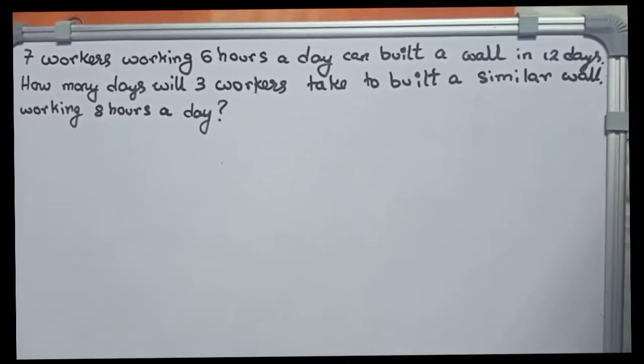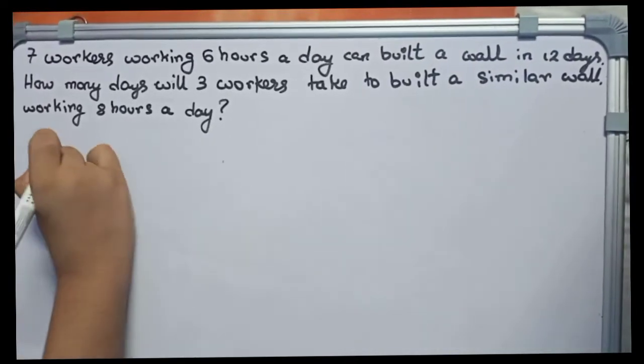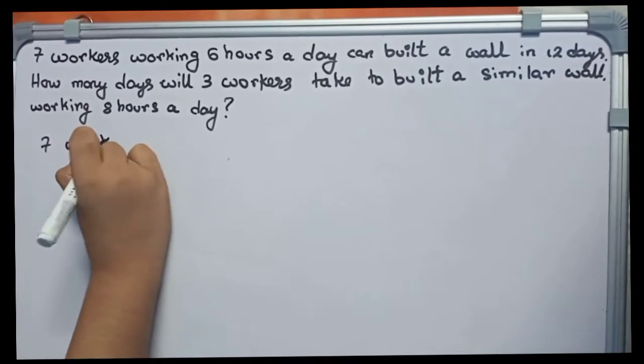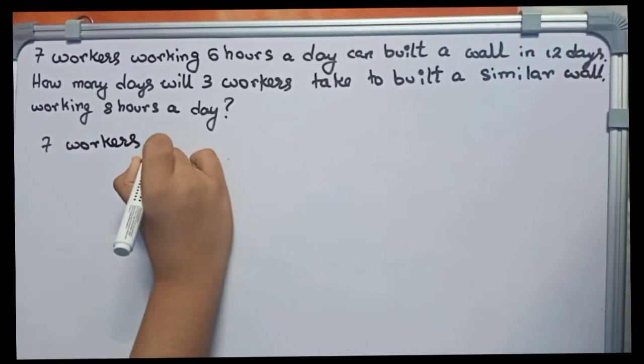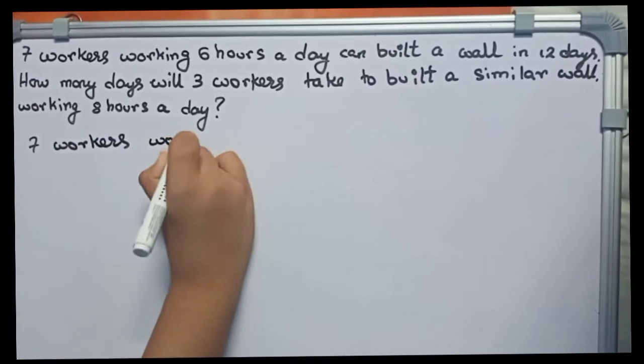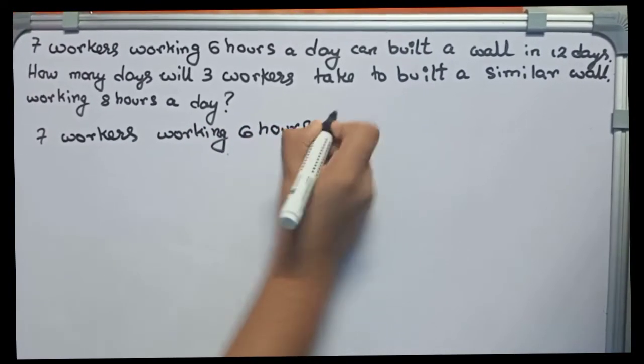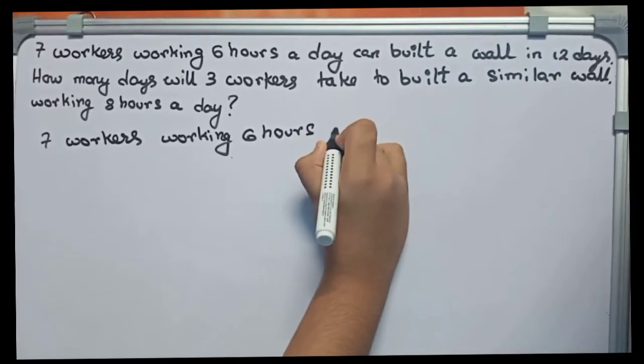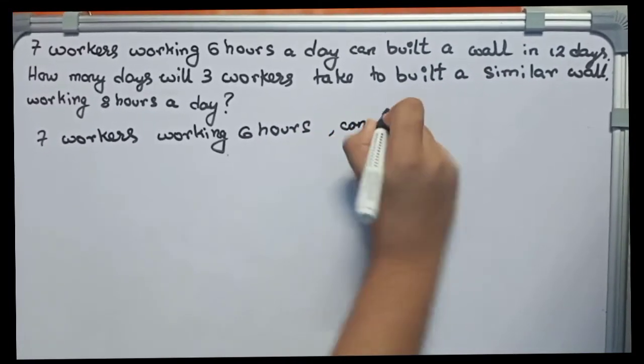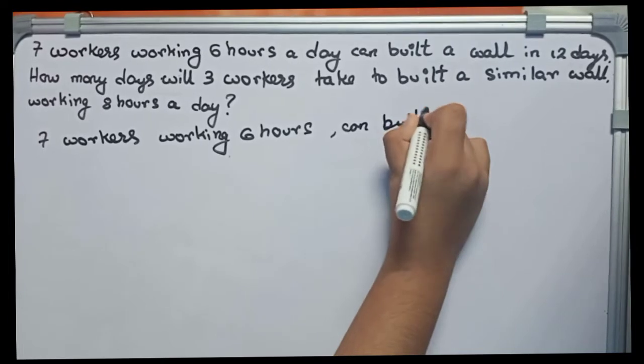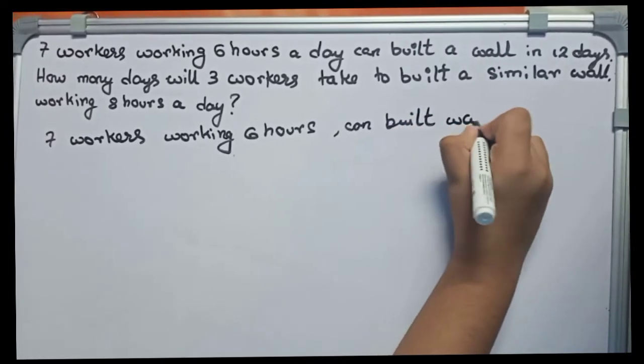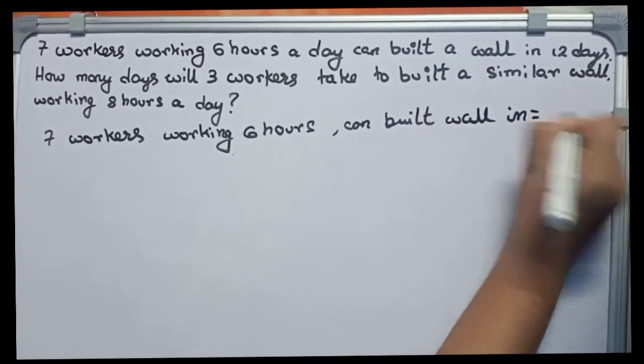So let's start. First we write: seven workers working six hours can build wall in this given 12 days.